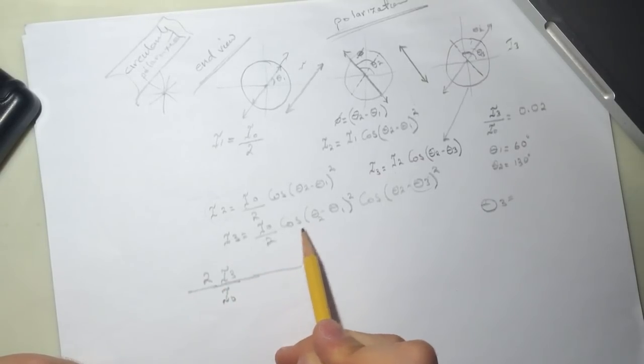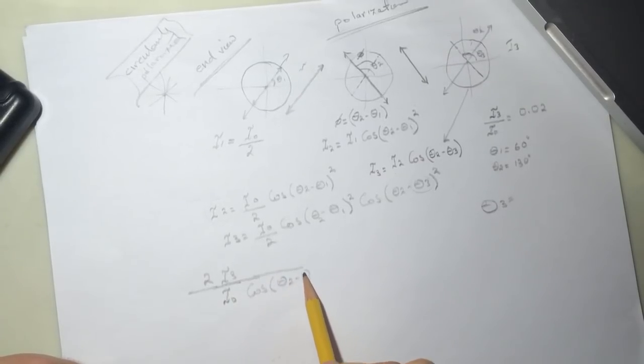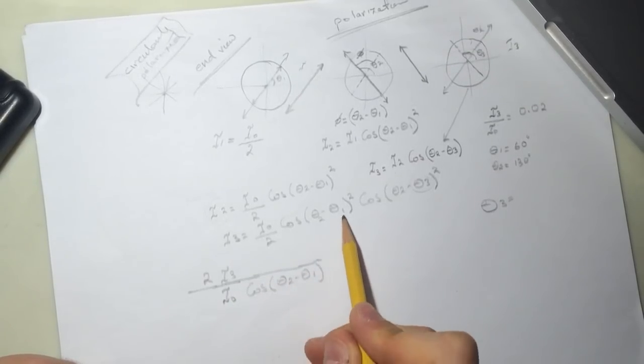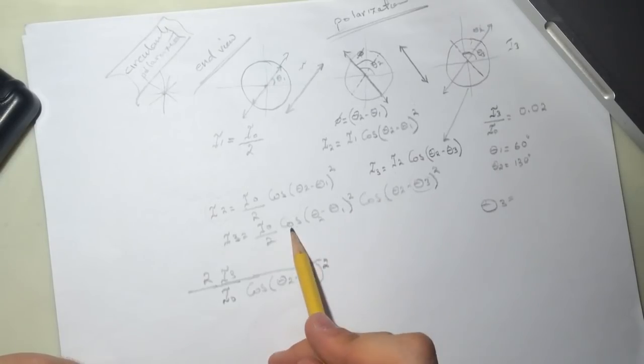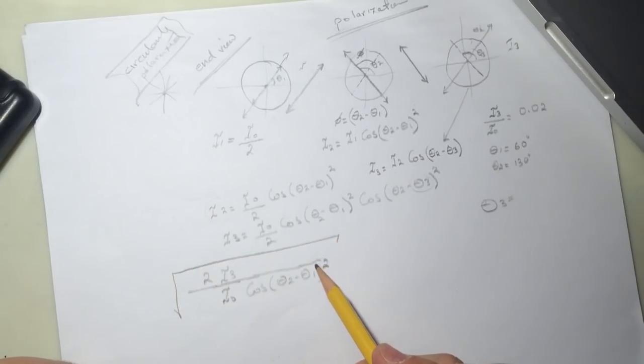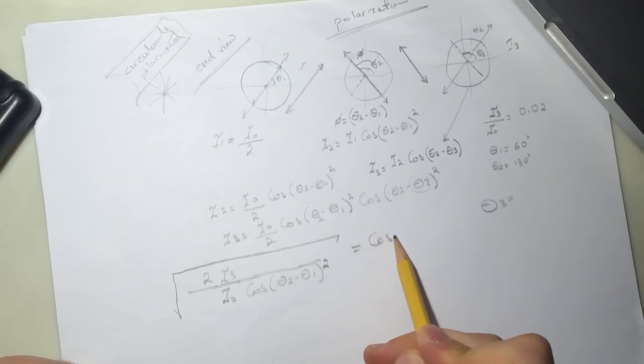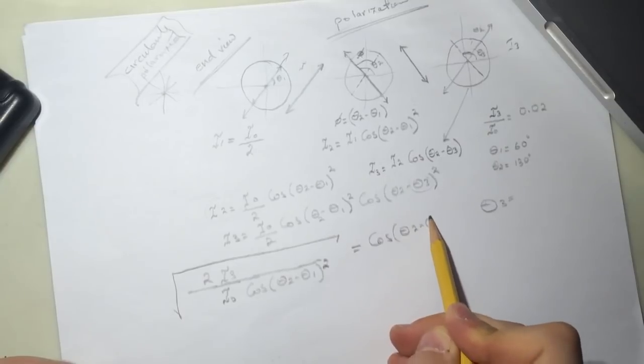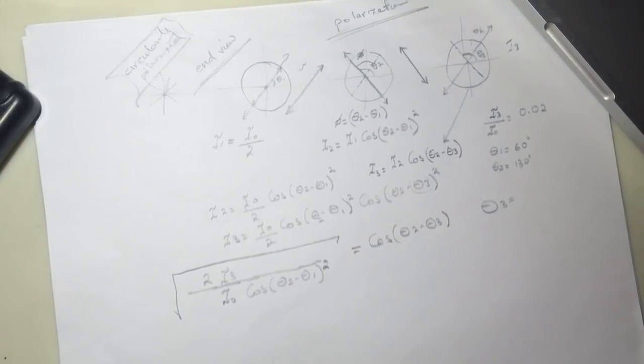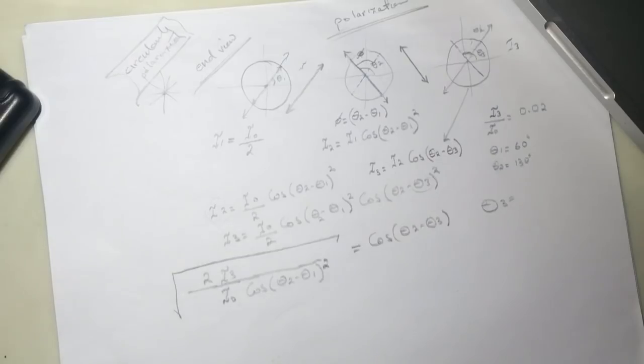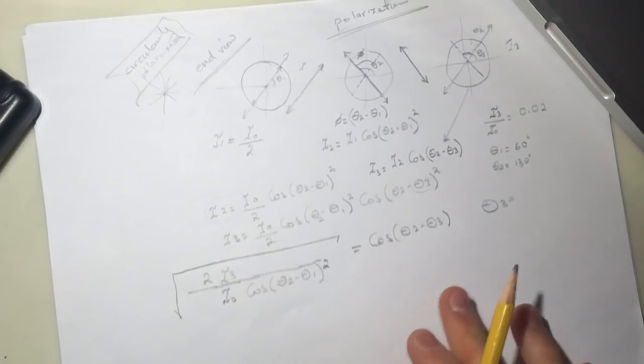So it's cosine squared of theta 2 minus theta 1 squared and yeah we get everything. So now take the square root, then we'll get the cosine of theta 2 minus theta 3. So let's plug in numbers.